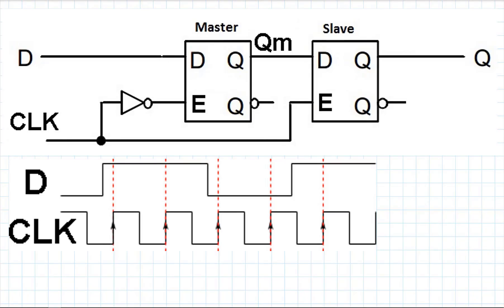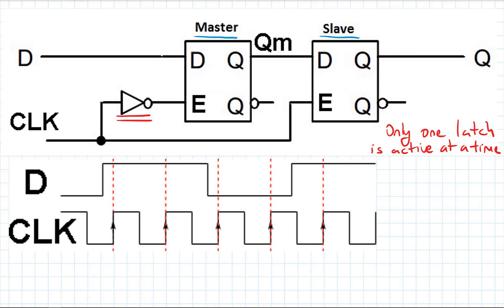In this video we will see how to design a negative edge triggered flip flop, but before that let's review the positive edge triggered flip flop. We can design an edge triggered flip flop using two latches - the first latch is called a master latch and the second is called a slave latch. To achieve edge triggering, only one latch should be active at a time, so we use an inverter on the clock signal for the first latch and connect the clock directly to the second.